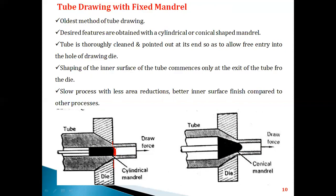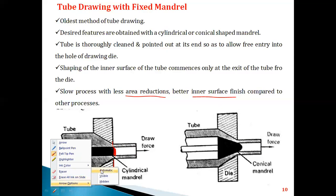Compared to tube drawing without a mandrel, tube drawing with a fixed mandrel gives better inner surface finish and limited area reductions. Using cylindrical or conical shaped mandrels, the inner surface quality is greatly improved. This concludes tube drawing with the fixed mandrel process.